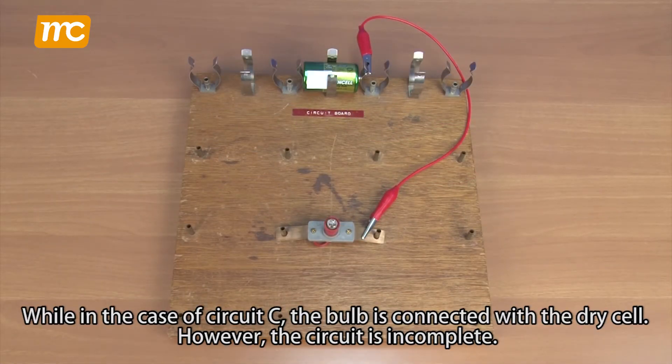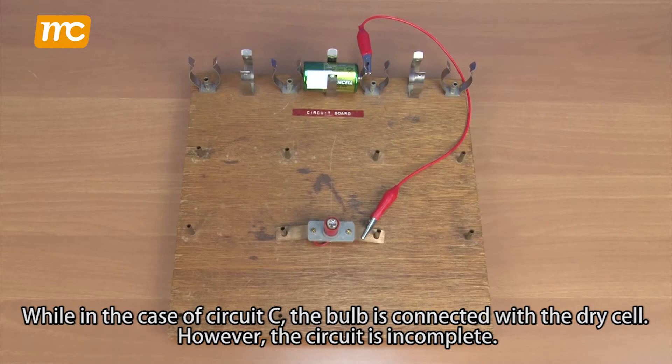While in the case of circuit C, the bulb is connected with a dry cell. However, the circuit is incomplete.